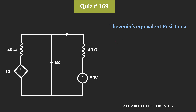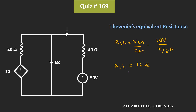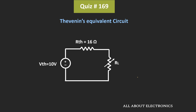The Thevenin's equivalent resistance Rth can be given as Vth divided by the short-circuit current. Here the value of Vth is equal to 10V, and the short-circuit current is equal to 5/8 A. That means the value of Rth is equal to 16Ω. So in this way, the Thevenin's equivalent resistance is 16Ω and Vth is 10V. If we look at the equivalent circuit, it will look like this.